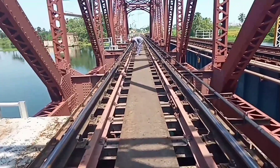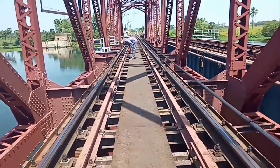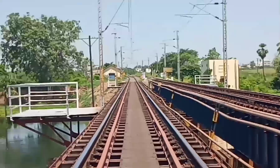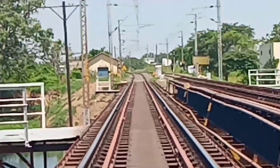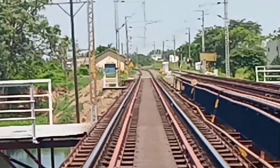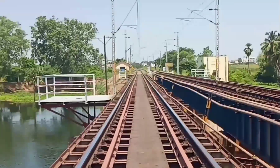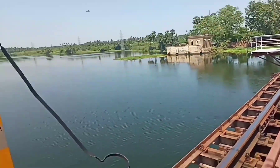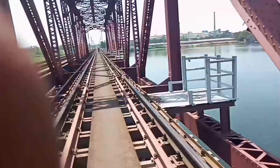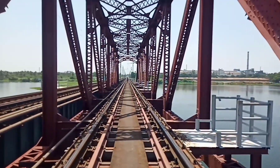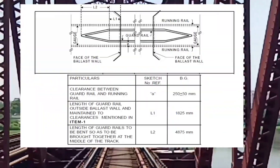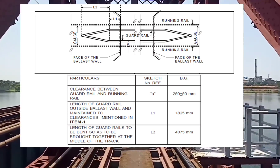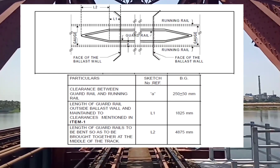The running rail is 60kg rail and the guardrail is 52kg rail. Only on through girder bridges, the guardrail should be splayed on both ends. On other girder bridges, the splaying should be done on the facing direction. The other end of the guardrail should be bent and buried in the ballast, and a wooden block should be provided at the centre.